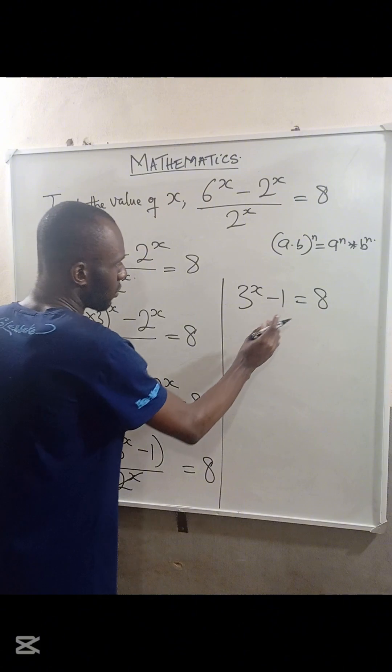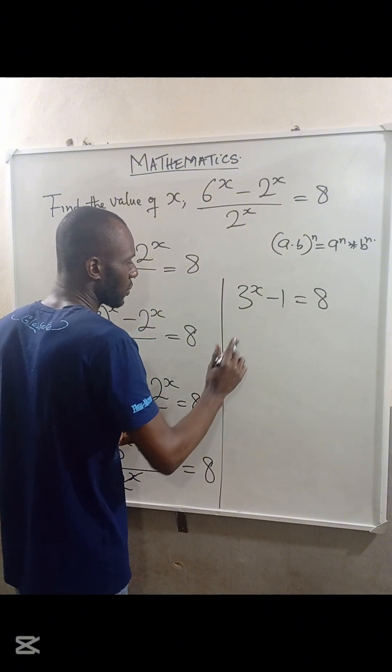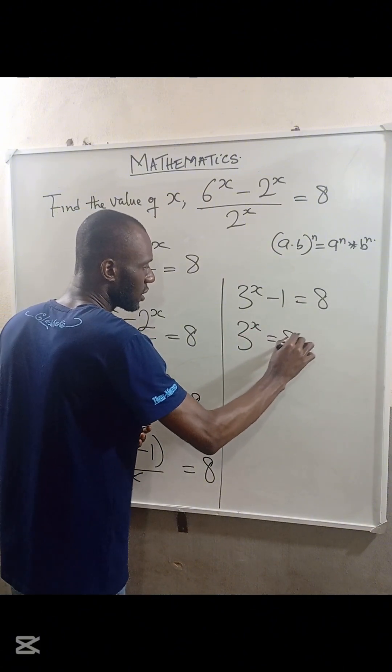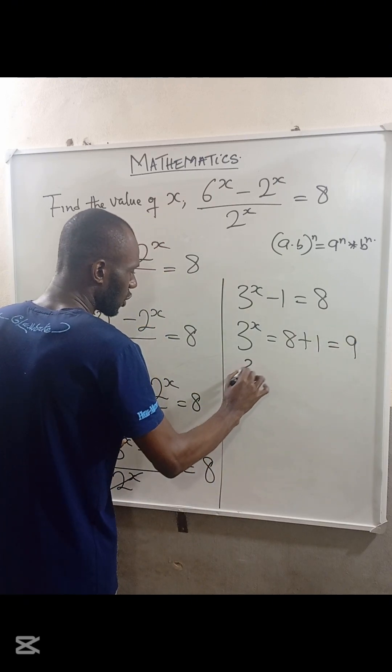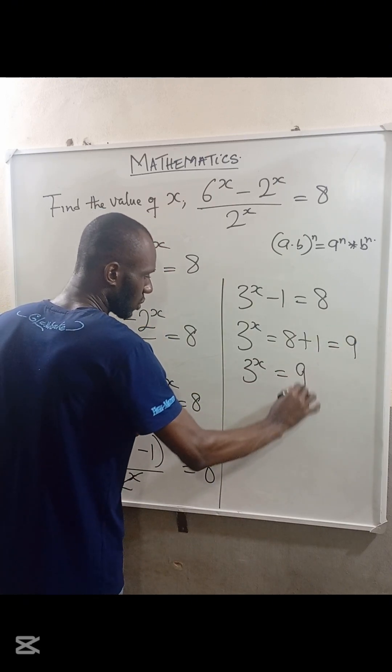At this point, we can move -1 to the right-hand side. So we have 3^x = 8 + 1 = 9.